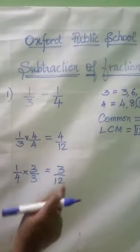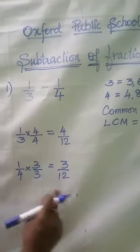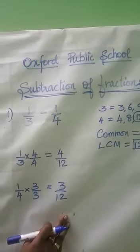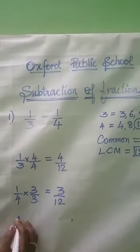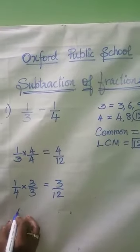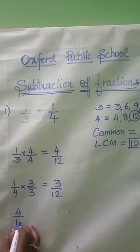So first fraction 4 by 12, next fraction 3 by 12. Now 4 by 12 and 3 by 12 have the same denominator 12. So let us go with subtracting. 1 by 3 now we have taken as the new fraction.